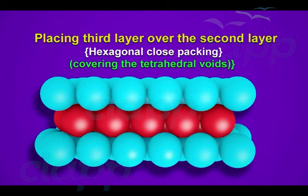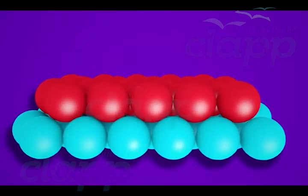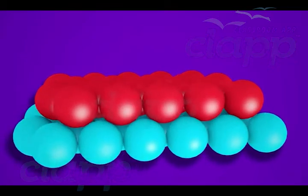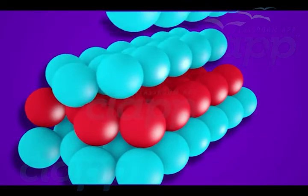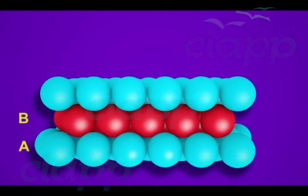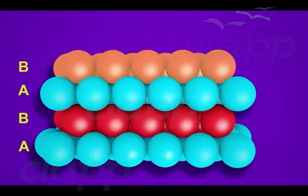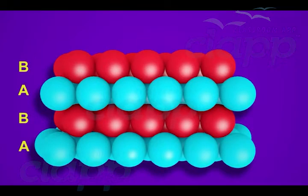When a third layer of two-dimensional hexagonal close-packed spheres is placed over the second layer, there are two possibilities. The first possibility is covering the tetrahedral voids. With the first layer as A type and second layer as B type, place a third layer such that it covers the tetrahedral voids. When arranged this way, the spheres of the third layer align exactly with the spheres of the first layer, so the third layer is also named A type. Similarly, the fourth layer aligns with the second layer and is named B type, so the pattern repeats as AB AB in alternate layers.